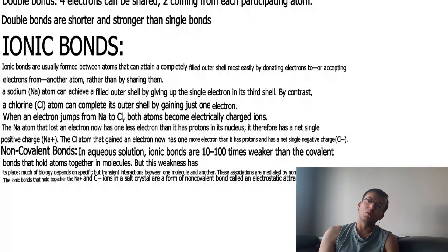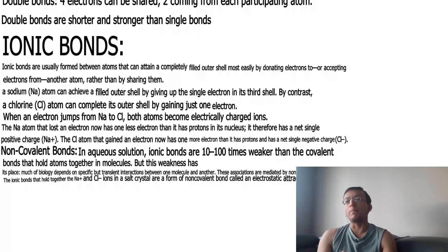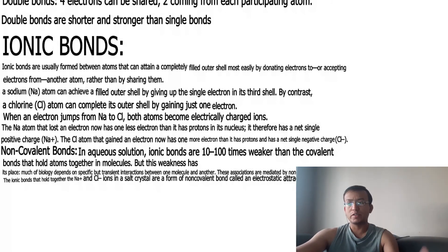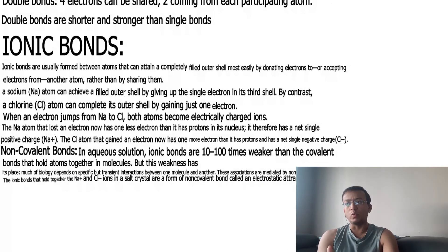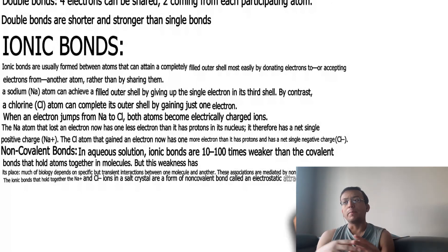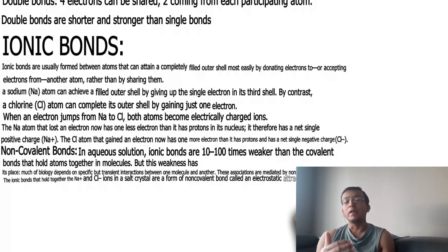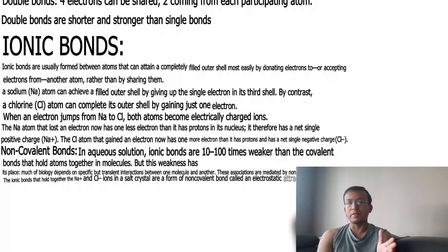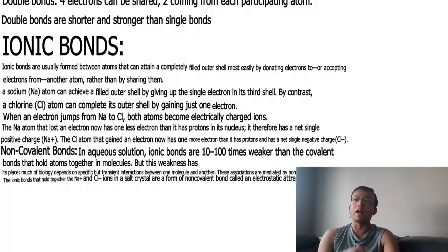Any large molecule with many polar groups will have a pattern of partial positive and negative charges on its surface. When such a molecule encounters a second molecule with a complementary set of charges, the two will be attracted to each other by electrostatic attraction, even through water — though water greatly reduces the strength of these charges in most biological settings. When present in large numbers, however, weak non-covalent bonds on the surfaces of large molecules can promote strong and specific binding.